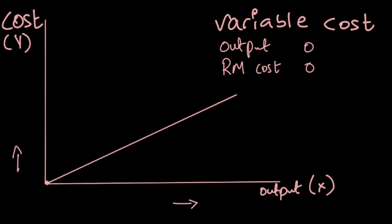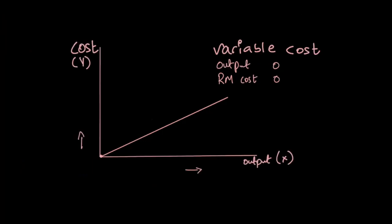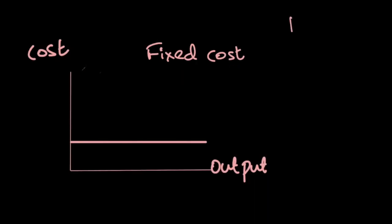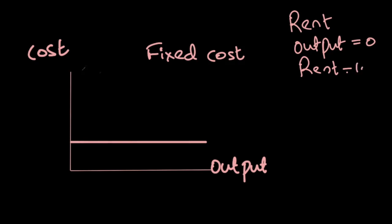Now let's look at how a fixed cost graph would look on the same axes. Using rent as an example: when my output is zero I still have to pay the rent — let's say ten thousand dollars. As I increase my output, my rent cost stays the same. So whether I produce zero units, 100 units, or 2,000 units, I pay ten thousand dollars. This gives a straight horizontal line, which depicts a fixed cost.